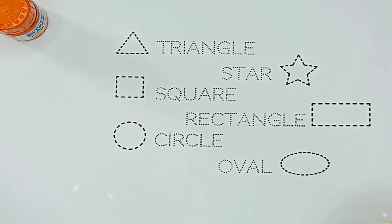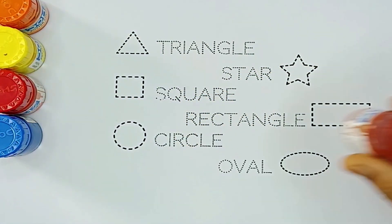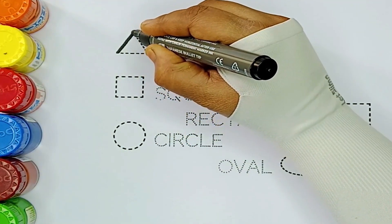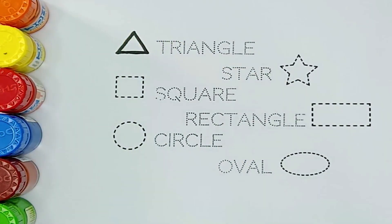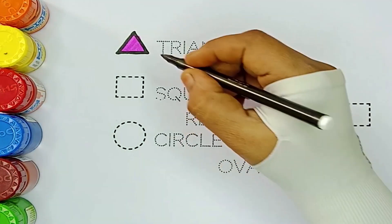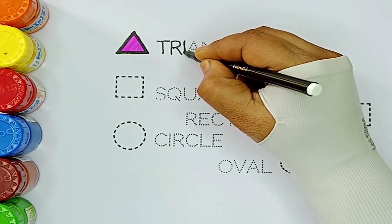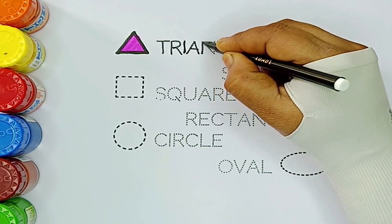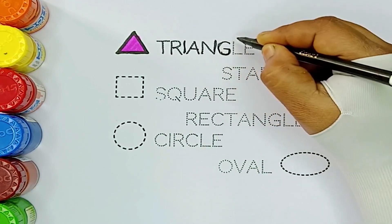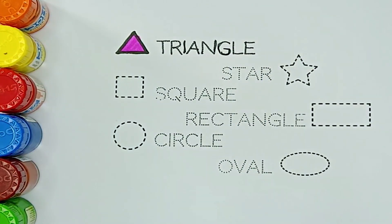Orange color, yellow color, red color, mauve color, brown color, green color. Triangle. Pink color. T-R-I-A-N-G-L-E. Triangle. Star.